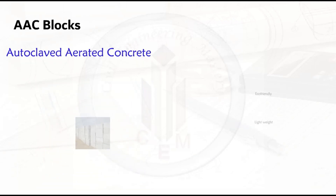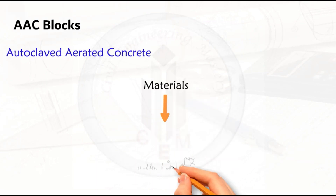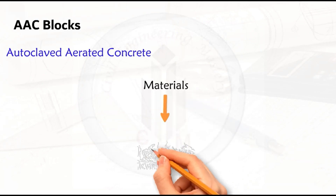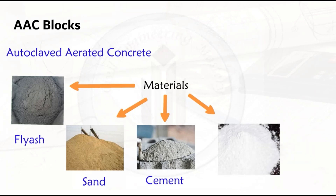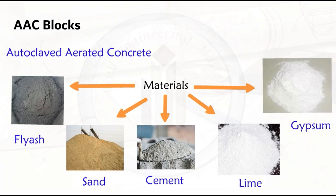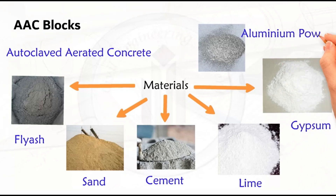Let's look into the raw materials used to produce AAC blocks. The materials are cement, sand, fly ash, lime, gypsum, and aluminum powder. The aluminum powder reacts with water to produce hydrogen gas, which forms tiny air bubbles in the mixture. These air bubbles give AAC blocks their lightweight and insulating properties.